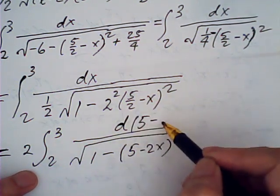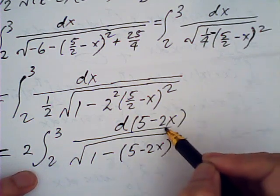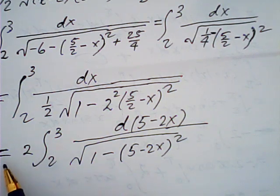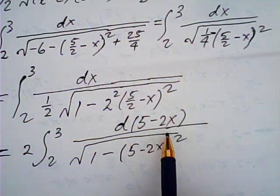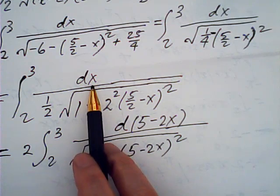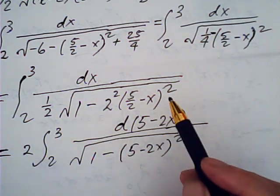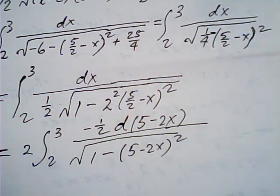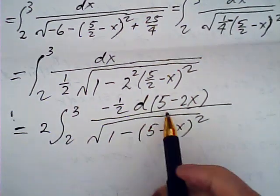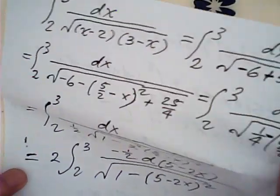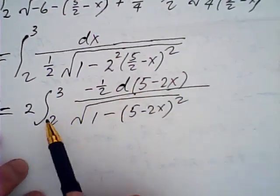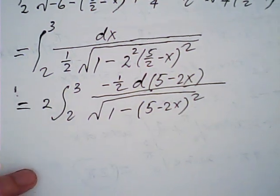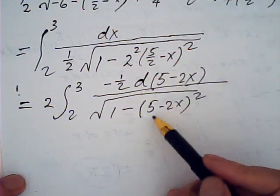Therefore I have to change the x into d of 5 minus 2x. But I have to maintain the equal sign. This one is negative 2 dx, I have dx only, therefore I multiply by negative half. Always maintaining equal sign and make adjustments in order to keep that equal sign there.